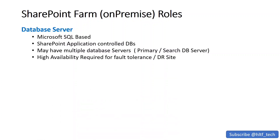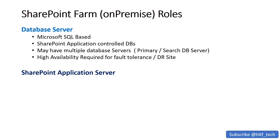You must not rely on one farm alone. You must have a replica of that farm — known as a fault tolerance or DR (Disaster Recovery) site — so that if your primary site fails, the DR site takes over the load without disturbing users or risking data loss.